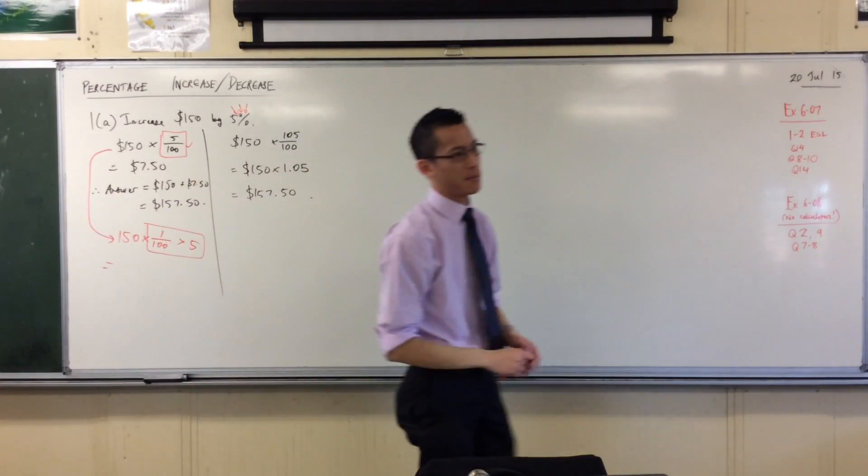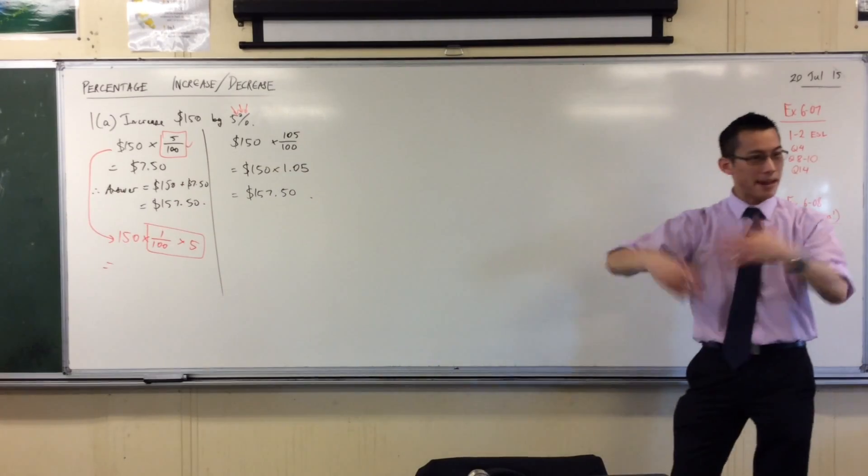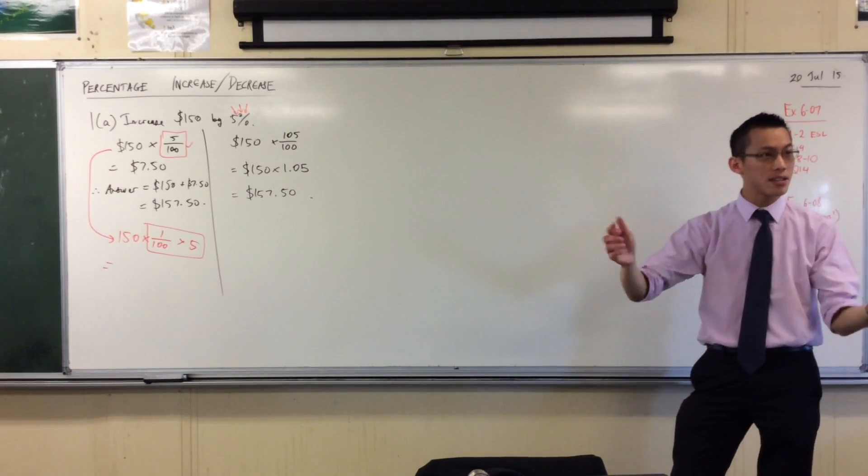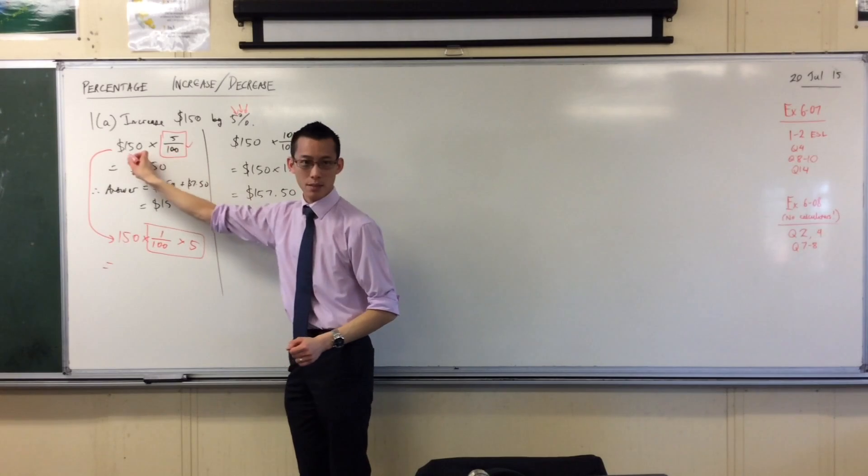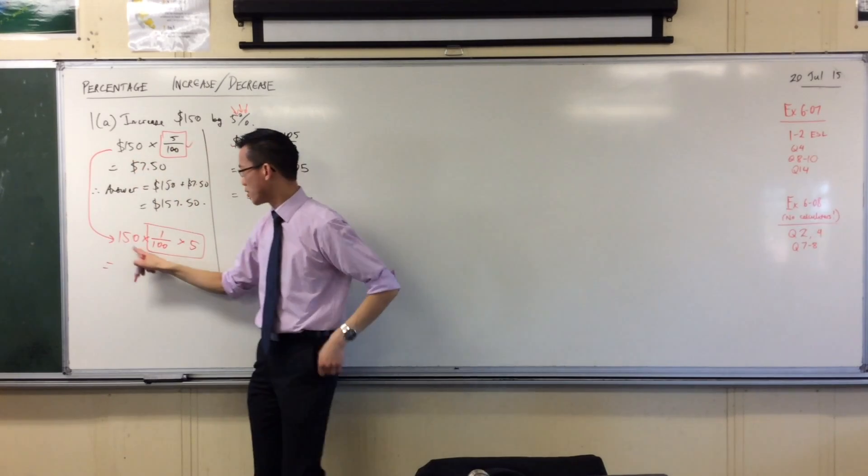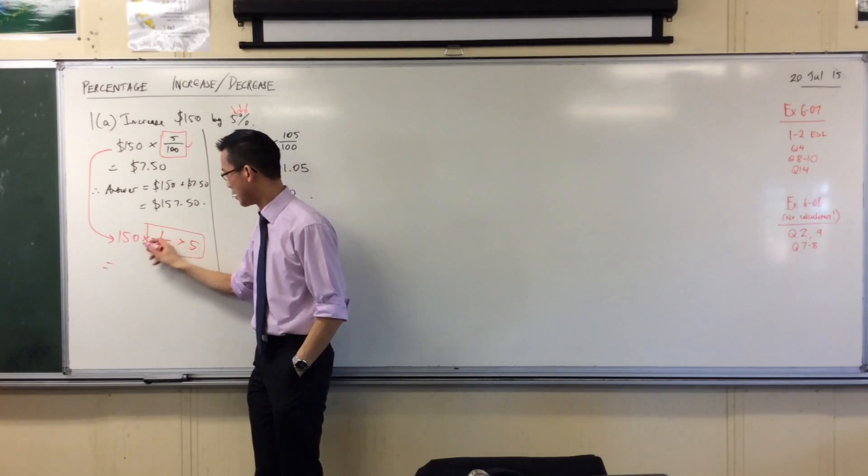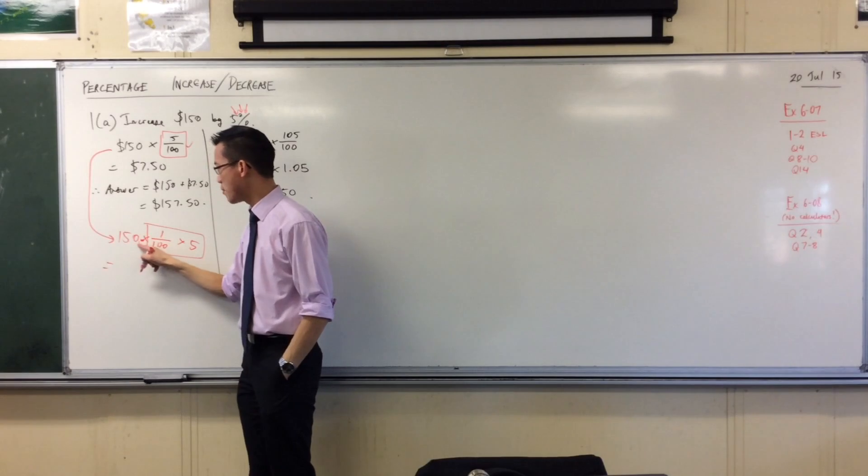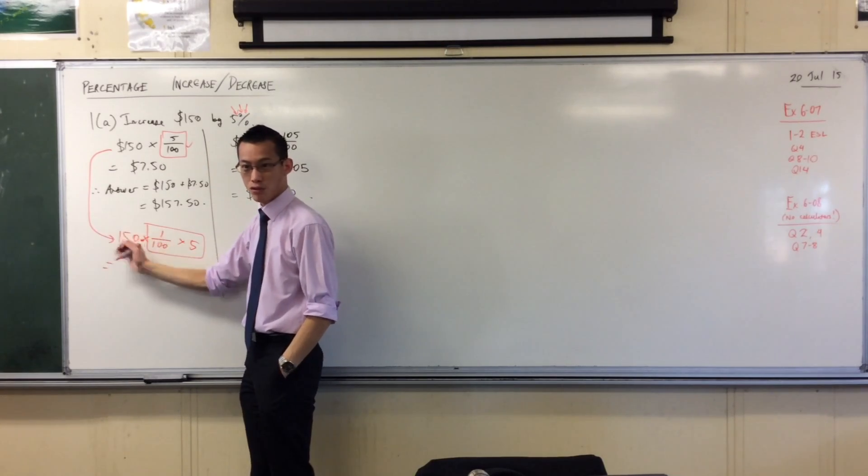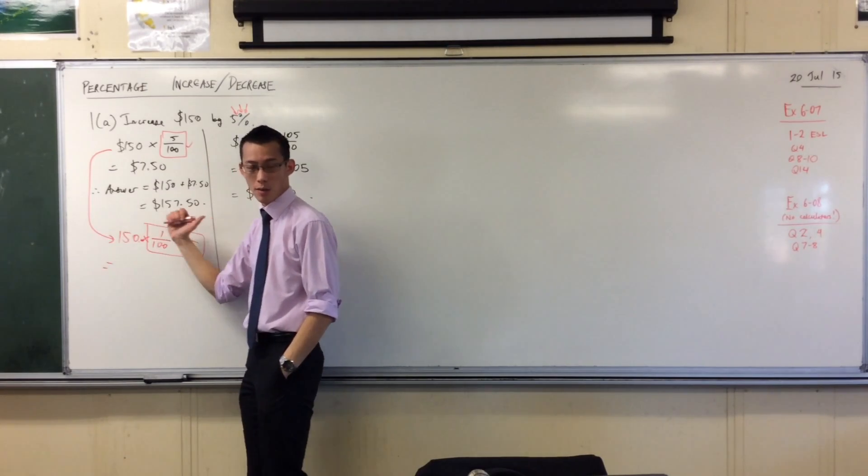150, I'm going to multiply it by 1 over 100, that's the same as dividing by 100, right? So when you're divided by tens or hundreds or thousands, you can just move the decimal place back and forth, right? So should I move the decimal place? It's there.